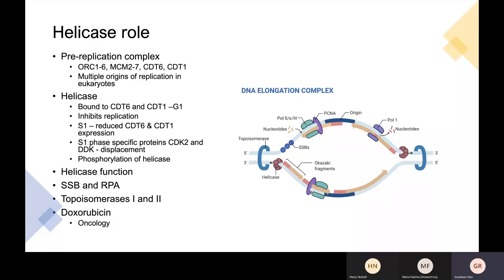Helicase then separates DNA strands at the origins of replication, forming replication forks and replication bubbles. SSB (single-strand specific binding protein) and RPA (replication protein A) in humans both prevent strands from re-annealing and prevent the hairpin effect. Topoisomerases 1 and 2 reduce torsional strain by making transient breaks in one or two DNA strands. A nice clinical relevance point is that anthracyclines like doxorubicin are topoisomerase 2 inhibitors, used in cancer treatment by preventing unwinding, stopping DNA replication, and preventing hyperproliferation.